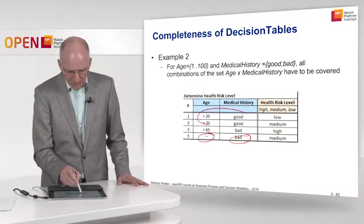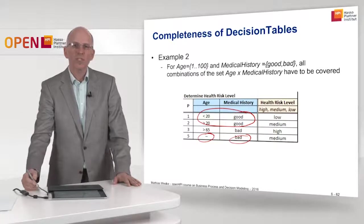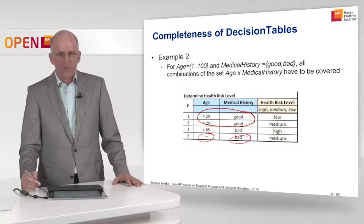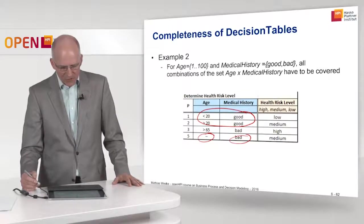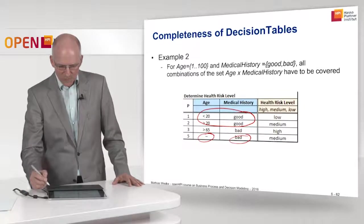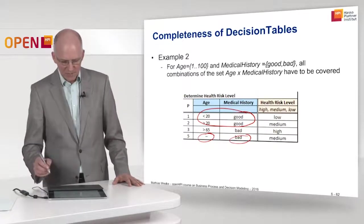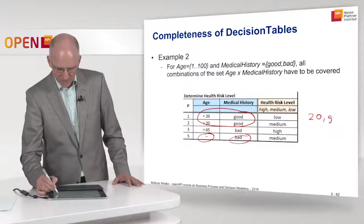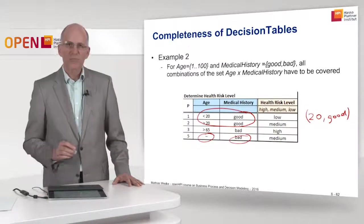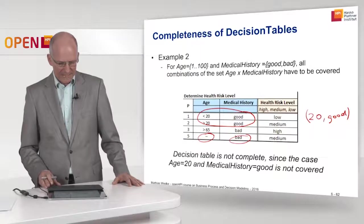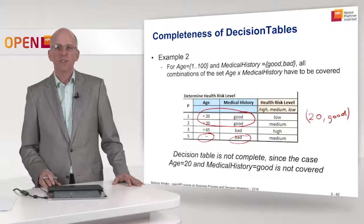Looking at the good part, we have two rows where medical history equals good. The first says age smaller than 20, and the second says age larger than 20. If you look closely, you'll see that there is one input combination not covered by this decision table: the case where age is 20 and medical history is good. That's the only input combination not covered, and therefore this table is not complete.